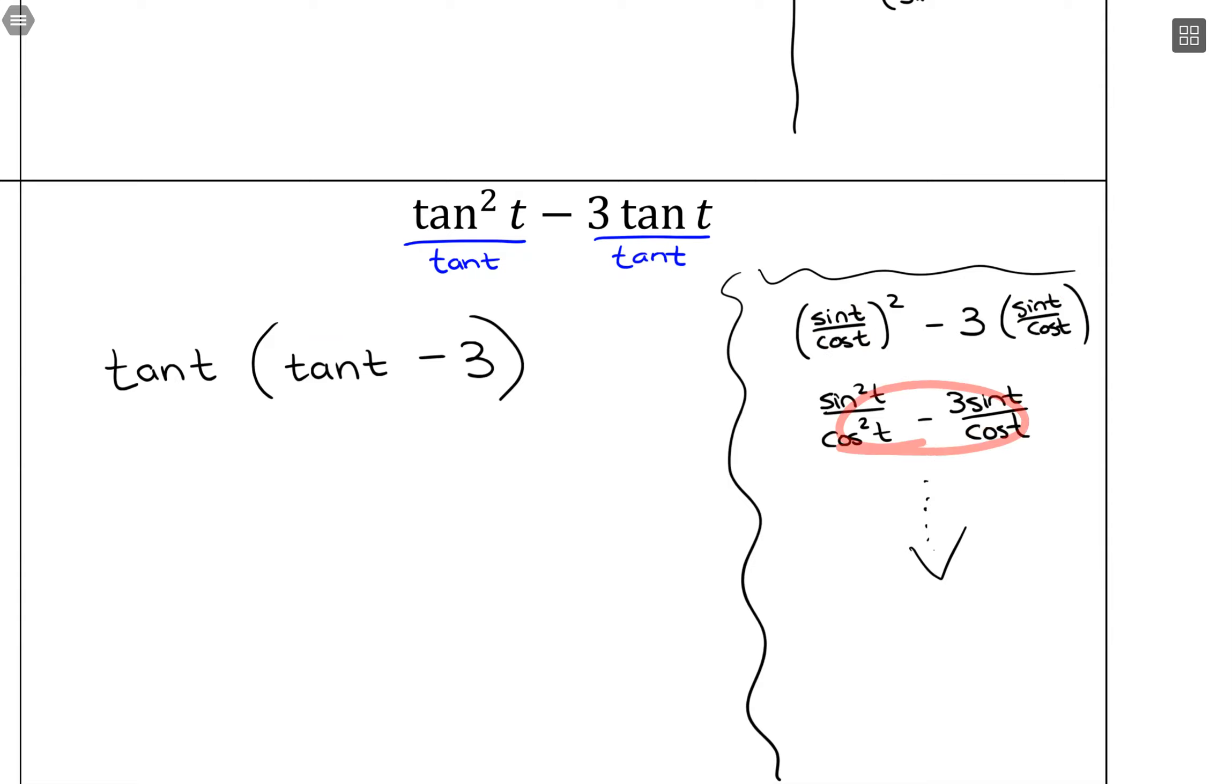What we're going to be doing in our future verifying identities is that we can go this factored route. But something that might happen is that if we switch everything into terms of sine of t and cosine of t, there might be ways to combine them. And in the next video, we're going to focus on these rational expressions and how to work with them.